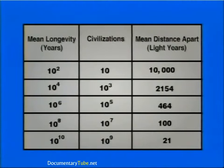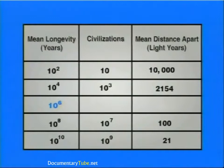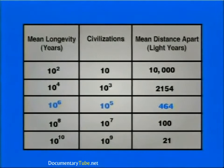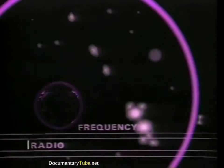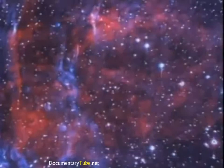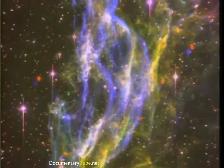For example, if we chose the mean longevity of a civilization to be a million years, we can calculate that there are 100,000 civilizations in our galaxy, and that the mean distance between civilizations is 464 light years. This also tells us that it will take 464 years for the signal to reach the Earth. Notice that any civilizations that SETI actually detects will be much older than we are. We have only been able to send out strong radio signals for a few decades, so we are in our infancy. Viewed against the geological time scale, we are the youngest technological civilization in the galaxy.